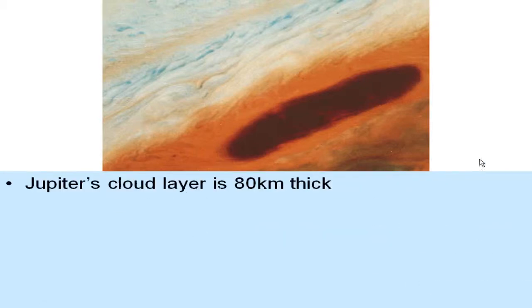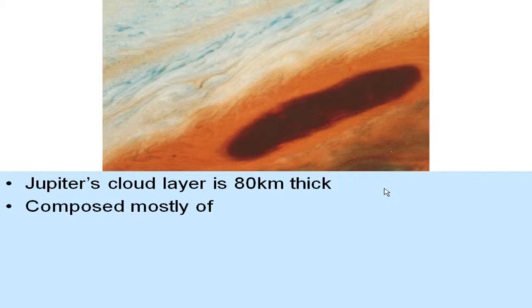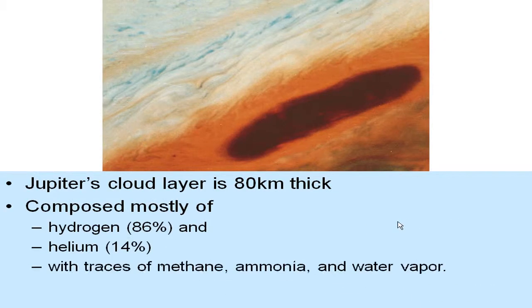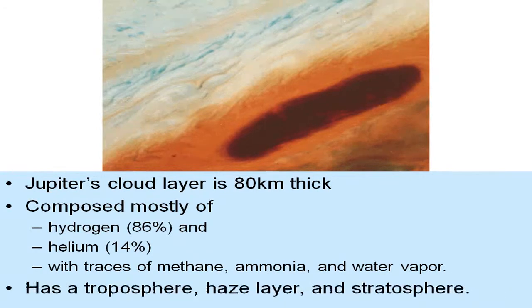Jupiter's cloud layer is 80 kilometers thick, composed mostly of hydrogen at 86%, helium at about 14%, and traces of methane, ammonia, and water vapor — mostly the two lightest elements in the universe. It has a troposphere, a haze layer, and a stratosphere, but these are mainly gaseous or icy type layers with no solid land.